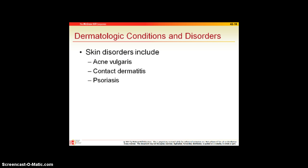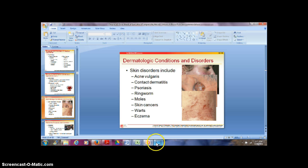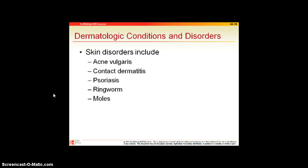Psoriasis is an autoimmune disorder that creates extremely dry skin with silverish or whitish plaques. Since you address this as a project in AMP-1, I'll keep it to the basics here. Ringworm — also called athlete's foot or jock itch — is a fungal buildup in the skin. It often looks circular and red, and is treated with topical creams.